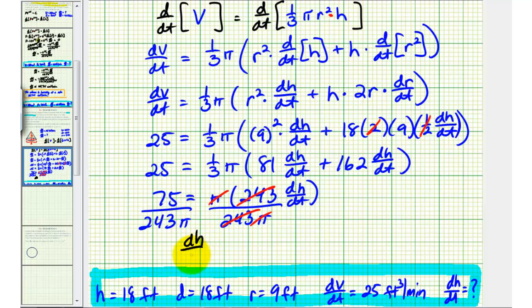dh/dt is approximately equal to 0.0982. Again, this is the change in the height with respect to time. So this would be feet per minute. Which means under these conditions, the height is increasing at a rate of approximately 0.0982 feet per minute.